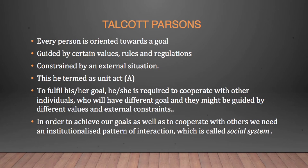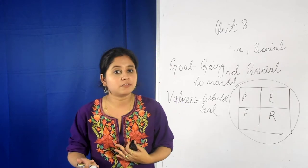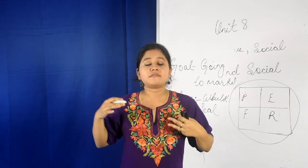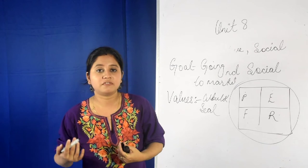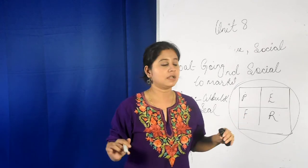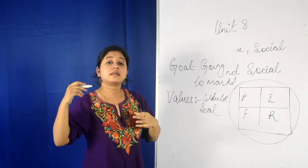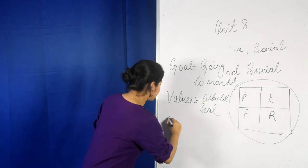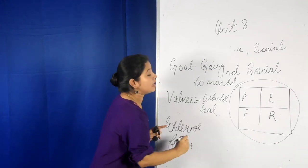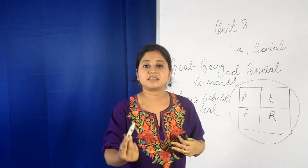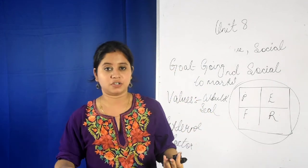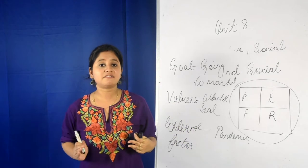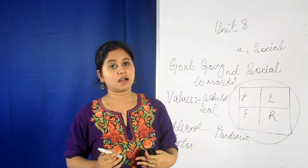Many of us would not steal. Even though we needed food and were not getting enough of it, we were guided by the value that we will not steal food. And then we were constrained by certain external factors — those factors beyond our control. In this context, the pandemic is the external factor that is not in our control.